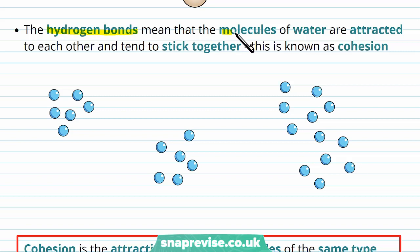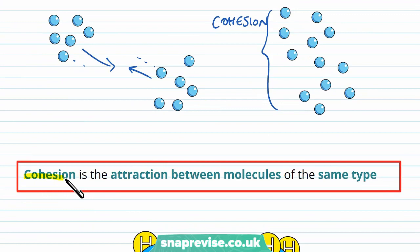We call this overall force and sticking together cohesion. So if water molecules in a bunch came together with another bunch, because of these hydrogen bonds which form between them, they end up sticking together in cohesion. By definition, cohesion is the attraction between molecules of the same type, and in this case water molecules are each attracted to each other via a hydrogen bond.